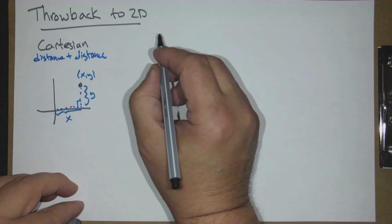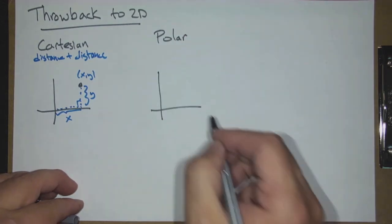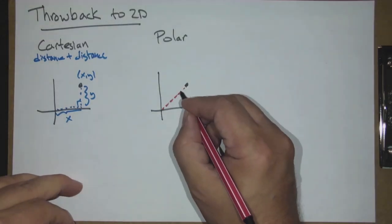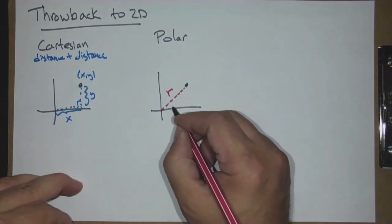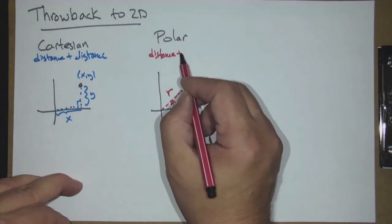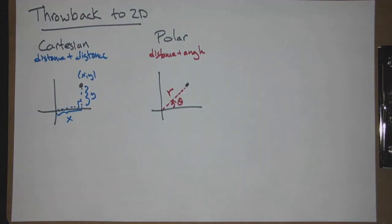An alternative is polar coordinates. In polar, we describe the same point using a different set of numbers: R, the distance the point is from the origin, and an angle theta. So for polar coordinates, it's a distance plus an angle. There's an intuitive analogy with radar: you have a central tower spinning a dish, collecting information about which direction it's pointing and how far away something is. That's polar.